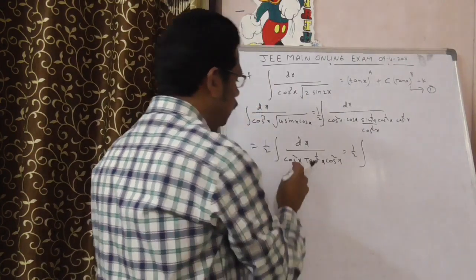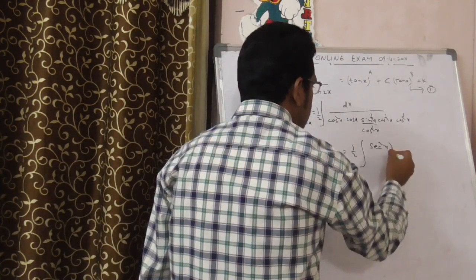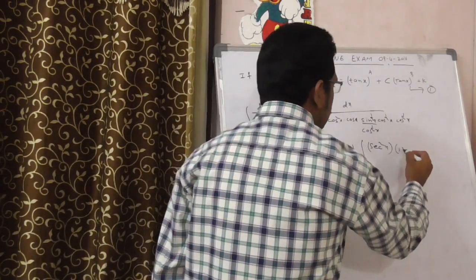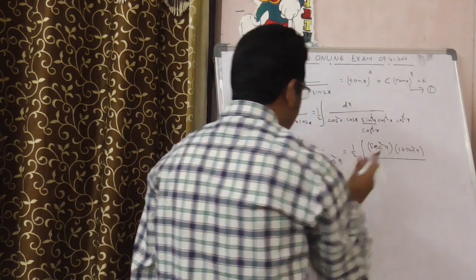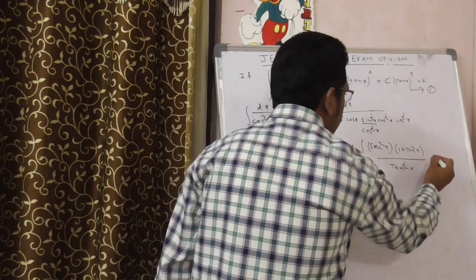Now, this is equal to 1 by 2 of integral 1 by cos square, this is secant square x. Again, 1 by cos square also secant square. I am writing this secant square as 1 plus tan square x by, what is the denominator? That is tan power 1 by 2 x dx.